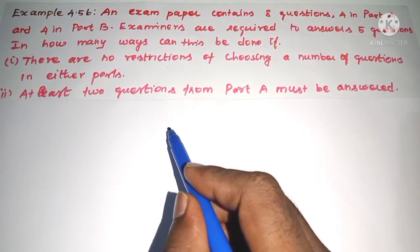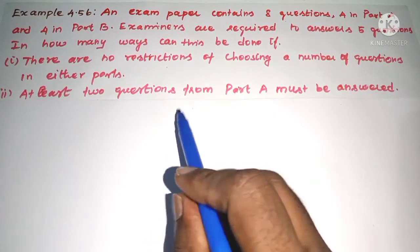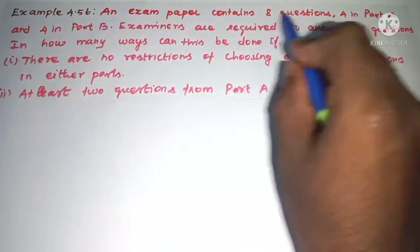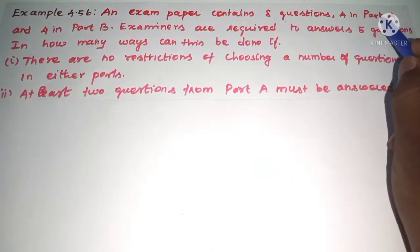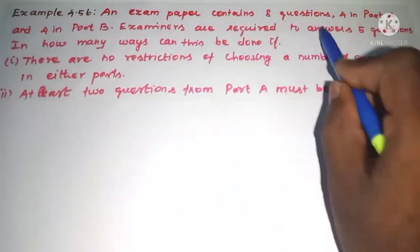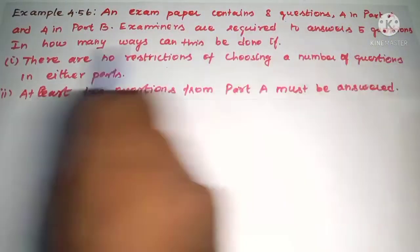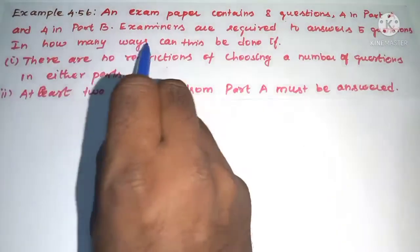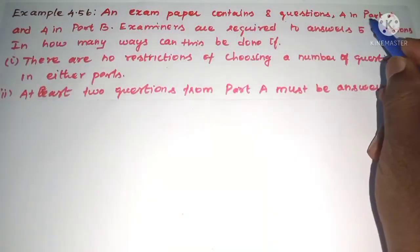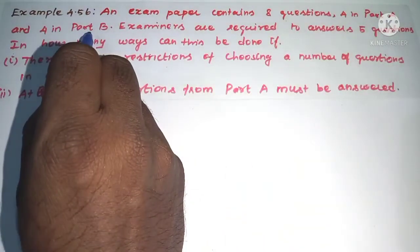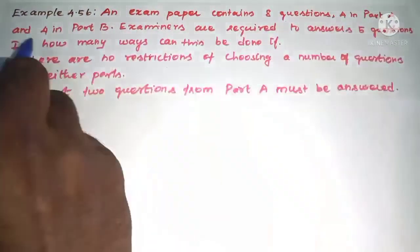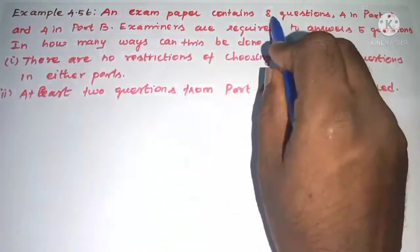Hi student, this is Salamu Max Division 11th Standard Example 4.56. An exam paper contains 8 questions: 4 in Part A and 4 in Part B. Examiners are required to answer 5 questions — in how many ways can this be done? Total Part A and Part B are two types. Part A is 4 questions, Part B is 4 questions, total 8 questions.